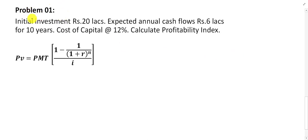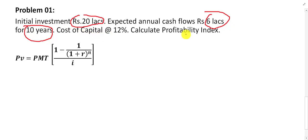Let us take a simple example for the Profitability Index. Initial investment is equal to 20 lakh, or 2 million. Expected annual cash flows are 6 lakh for 10 years. Cost of capital is 12%. Calculate the Profitability Index method. The cost of the project is 20 lakh, or 2 million, and the inflow of the project is 6 lakh per year, or 600,000.